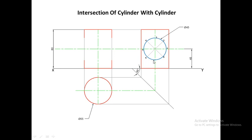This circle represents the side view of the horizontal cylinder with diameter 45 mm. Now we mark the points of intersection — those points where the horizontal cylinder will cut the vertical cylinder. The circle is divided into 8 equal parts, giving points 1 to 8. These are the points of intersection. We will next project the top view and front view of the horizontal cylinder from these points.